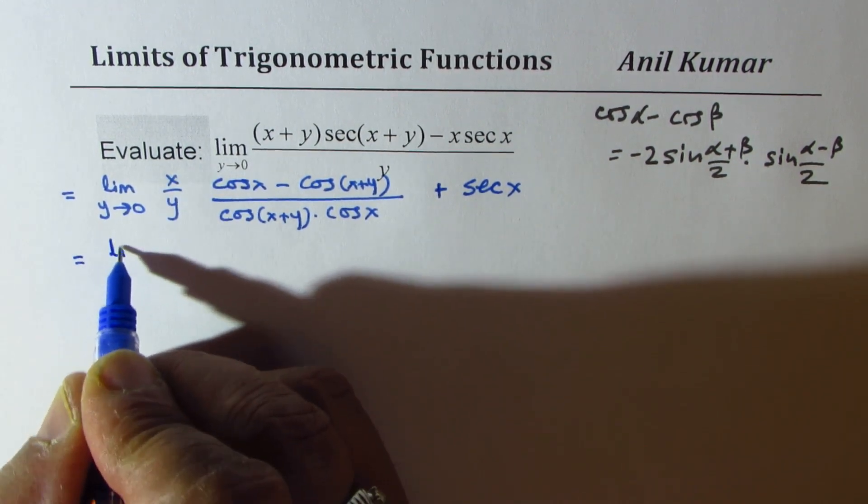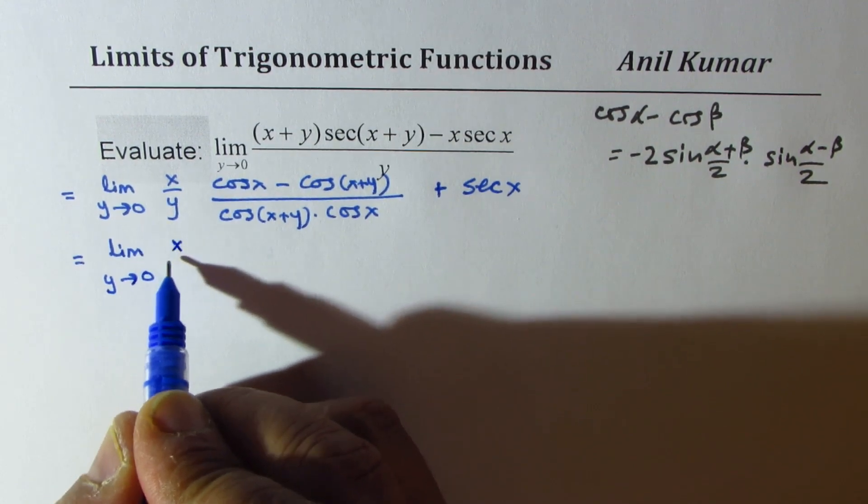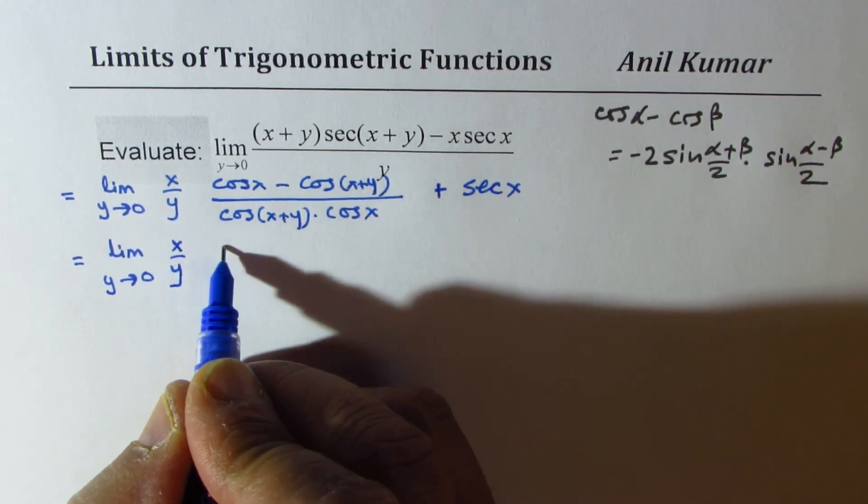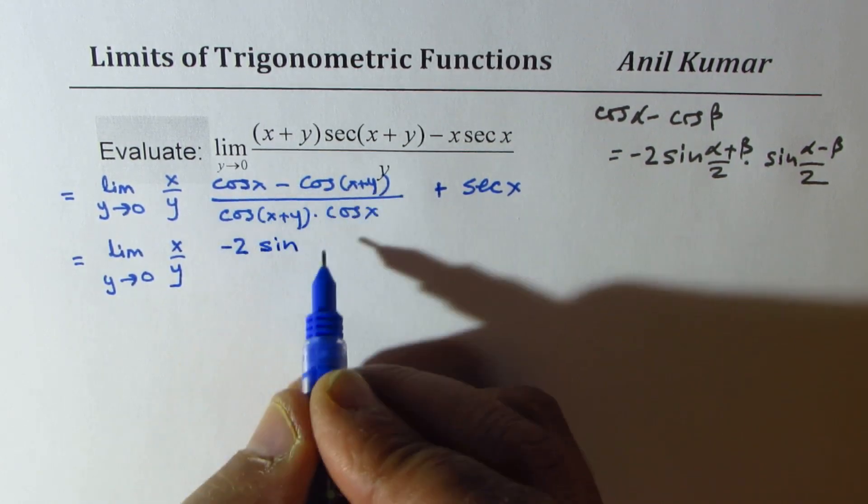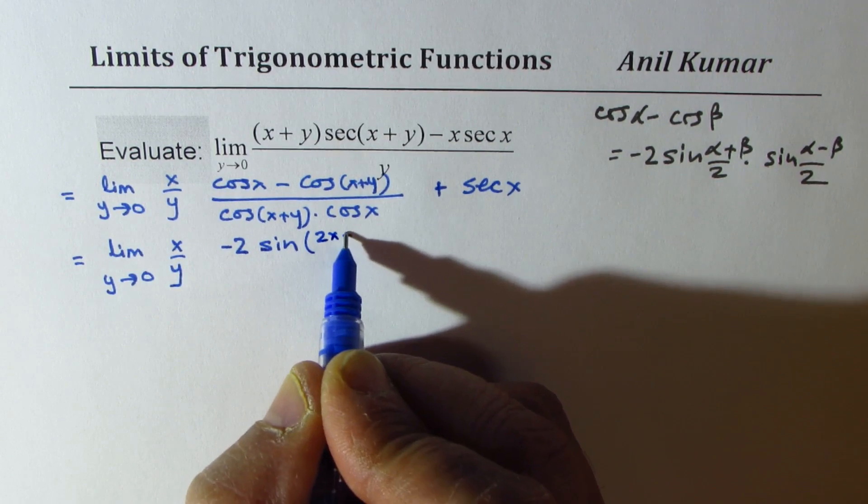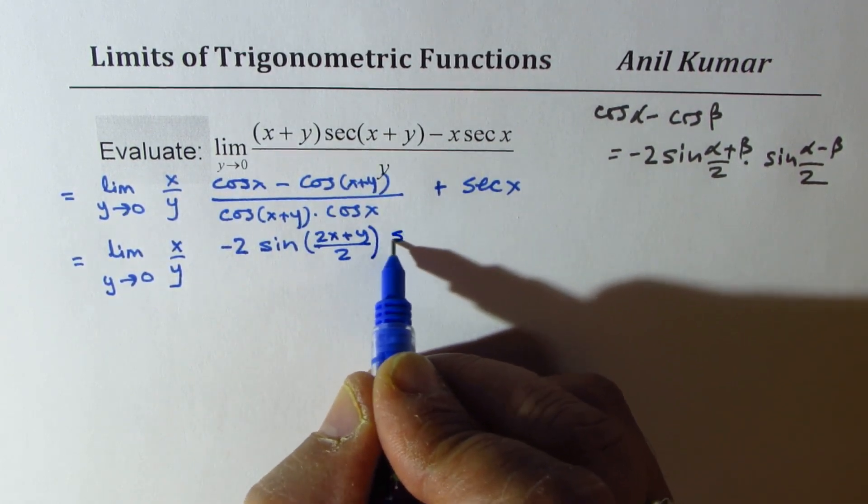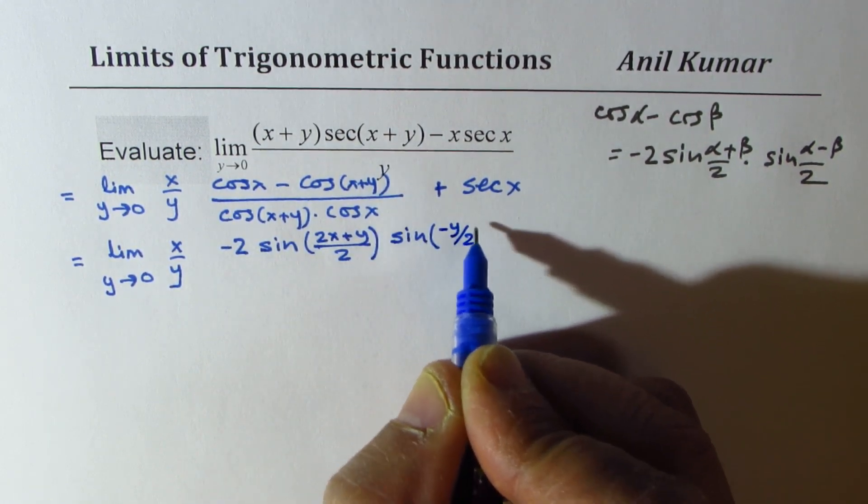So we get here limit y approaches 0, x over y. So that becomes minus 2 times sin of when you add them you get 2x plus y divided by 2, and when you subtract you get minus sin minus y by 2.